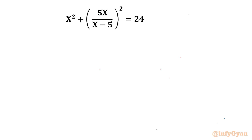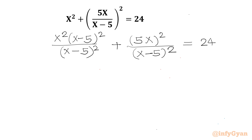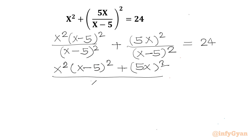Let's get started by considering our denominators the same. I can multiply the first term with (x - 5)² and also multiply the denominator by the same. So it becomes x² overall plus 5x, whole square, divided by (x - 5)², equal to 24. Now I can add both terms of the numerator: (x - 5)² plus (5x)², divided by (x - 5)² equal to 24.